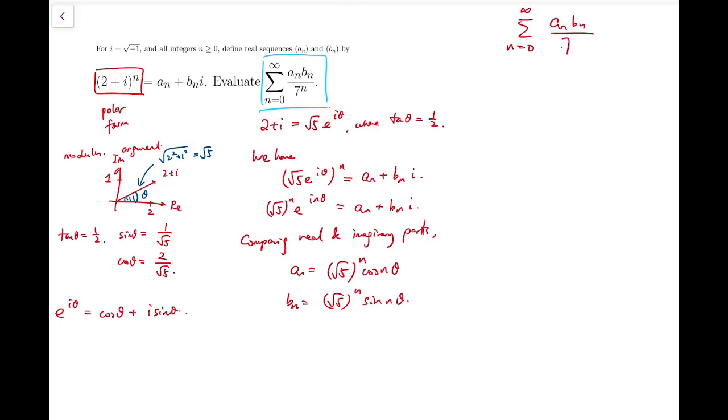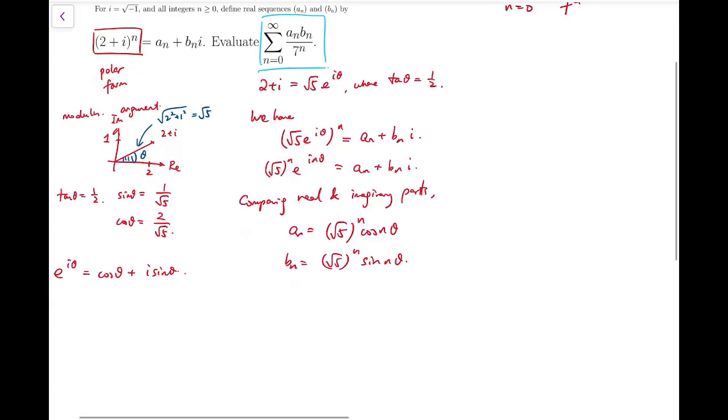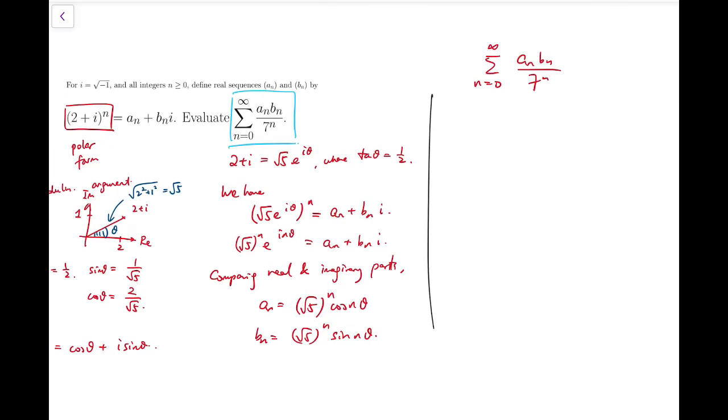The sum now becomes (√5)^n·cos(nθ) times (√5)^n·sin(nθ) over 7^n. That equals (5/7)^n times sin(nθ)·cos(nθ).